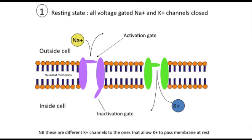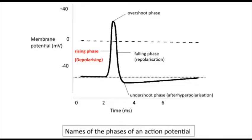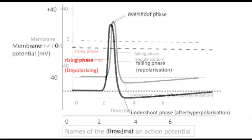We will look at each stage of the action potential in turn. The first stage is called the depolarising phase. This begins when the membrane of the neuron becomes slightly positive, normally due to incoming excitatory information. As a result, the voltage at the axon hillock of the neuron reaches a potential of around minus 40 millivolts — this is called the threshold potential. The axon hillock, which is located where the cell body forms the beginning of the axon, is the region of the neuron where action potentials are generated.